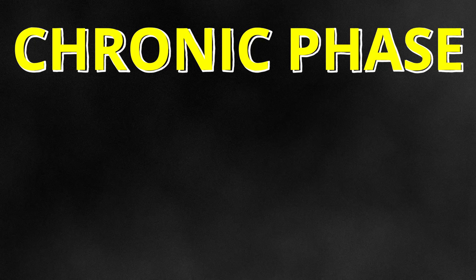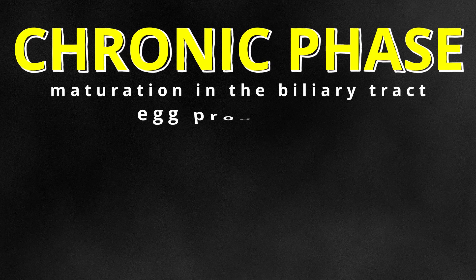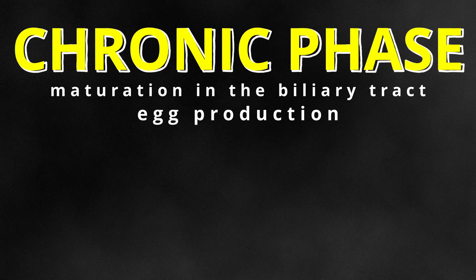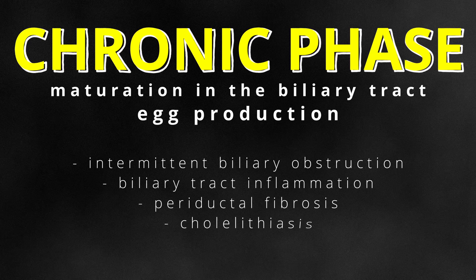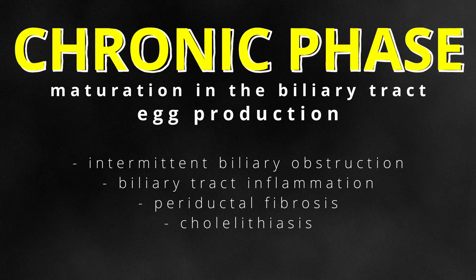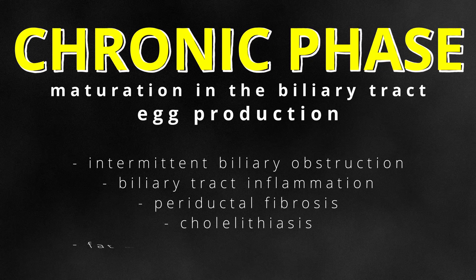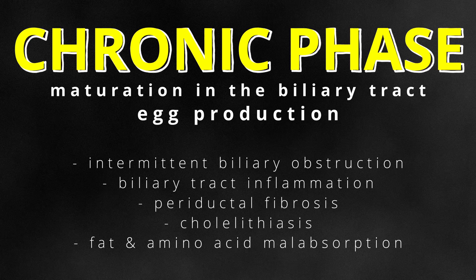The chronic phase of fascioliasis occurs once the parasite reaches the biliary tract and fully matures into an adult. The adult fluke feeds and produces eggs but does not typically cause an intense immune response. Symptoms in the chronic phase can include intermittent biliary obstruction, inflammation in the biliary tract, fibrosis which can potentially lead to cirrhosis, and gallstone formation or cholelithiasis in rare cases as the worm or its eggs form the nidus for stone formation. Due to blockage of bile flow into the gastrointestinal lumen, persons with chronic fascioliasis may also develop secondary malnutrition complications such as malabsorption of fats and amino acids due to incomplete esterification. In most cases, chronic fascioliasis is subclinical as the infected person continually sheds parasite ova in their stools.